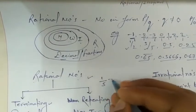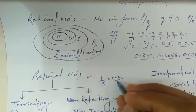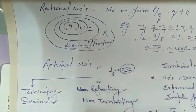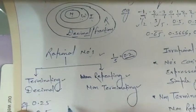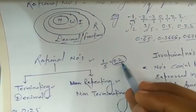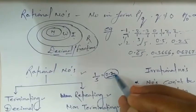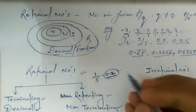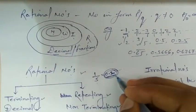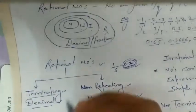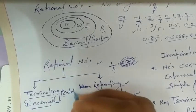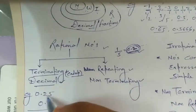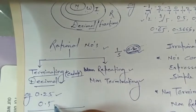For example, dividing 1 by 5 gives 0.2. This is a rational number. After decimal, if digits are finite and not moving further, we say it has terminating decimal expansion — meaning it ends. Example: 0.25 is also terminating decimal. When digits after the decimal end, the number has terminating decimal expansion.